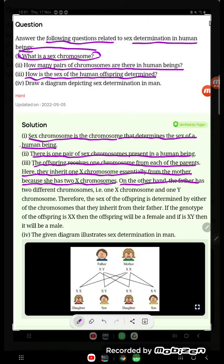On the other hand, the father has the two different chromosomes, that is X chromosome and one Y chromosome. Therefore, the sex of the offspring is determined by either of the chromosomes that they inherit from their father.